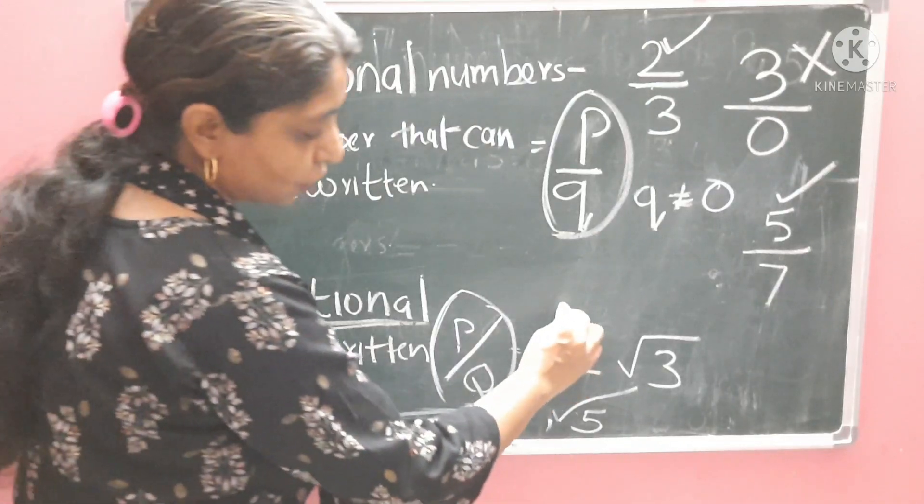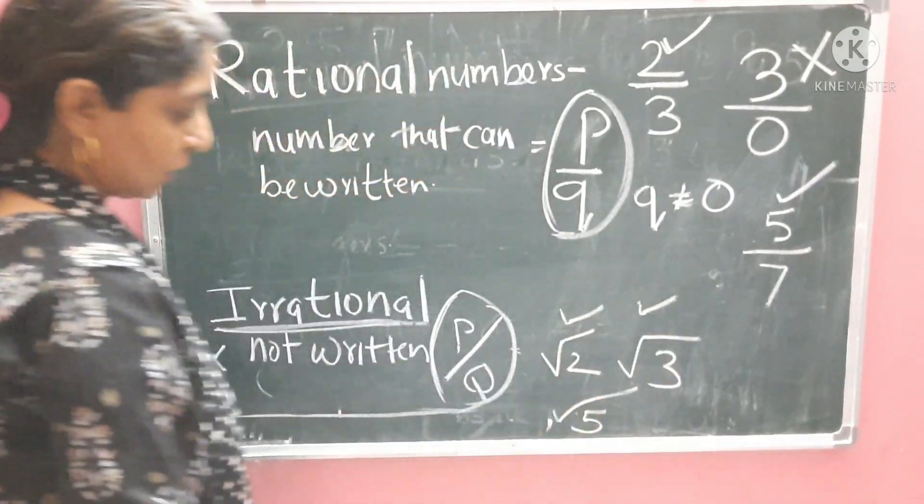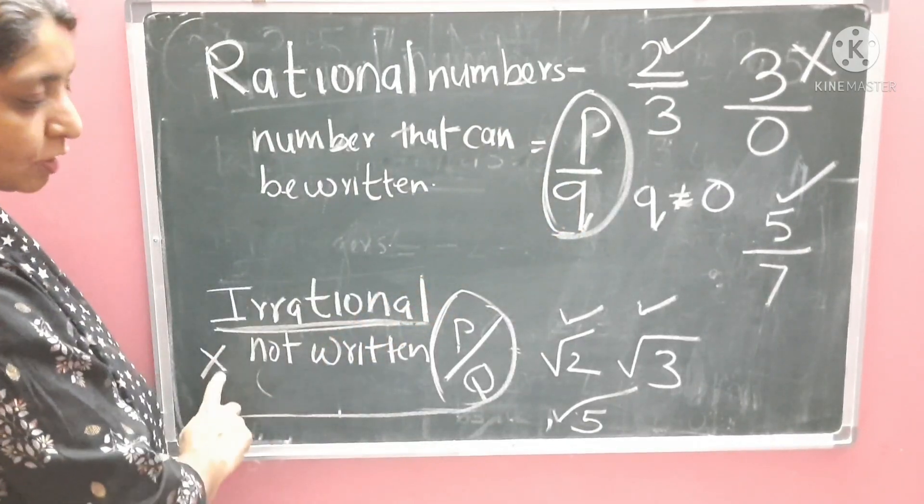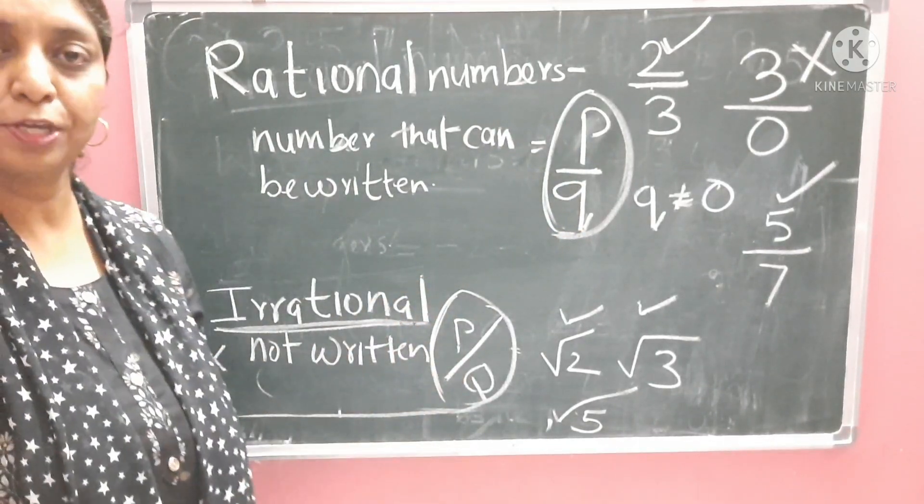They are in a different form. So, these are irrational numbers. So, we have seen rational number P upon Q, irrational number not in the form of P upon Q.